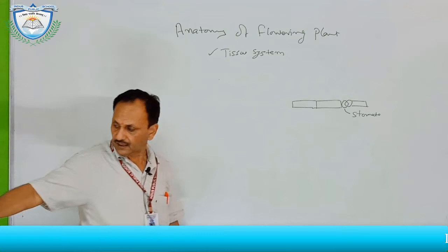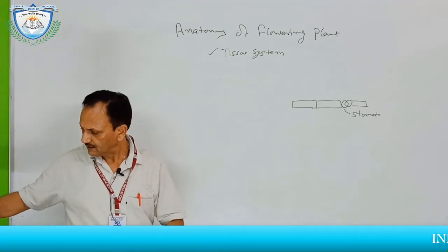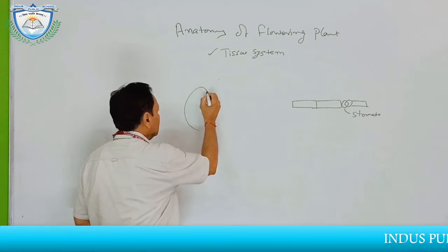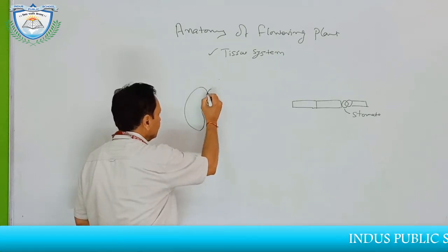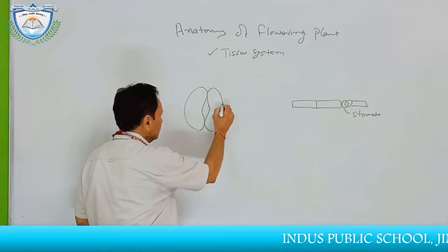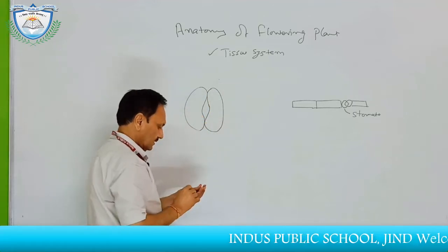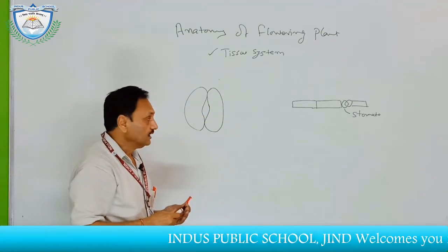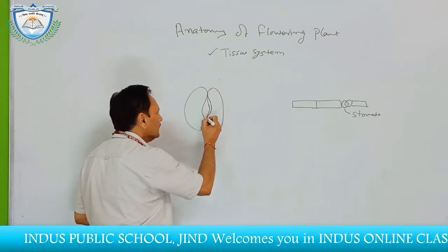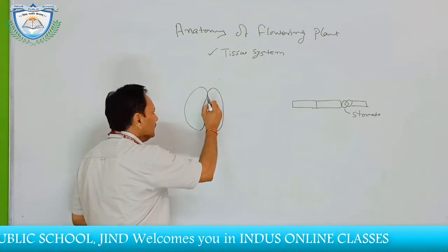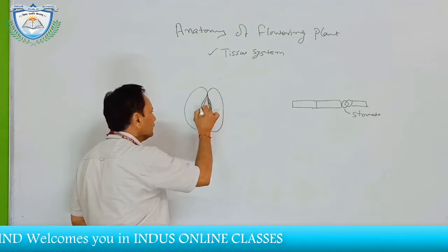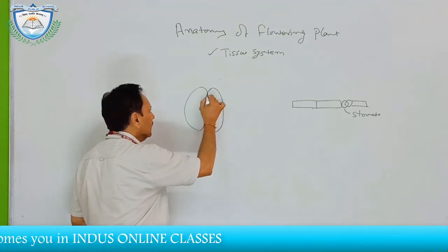This stomata has two cells, that is kidney-shaped cells — this is the kidney cell and this cell is called the guard cell. The inner layer of this guard cell is thick rather than that of the outer.